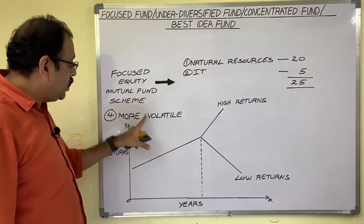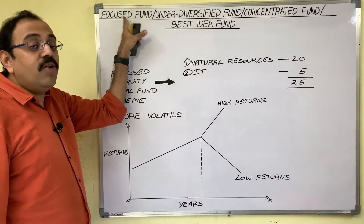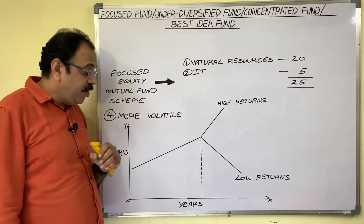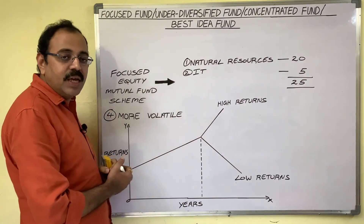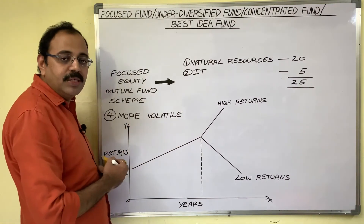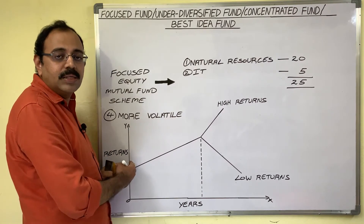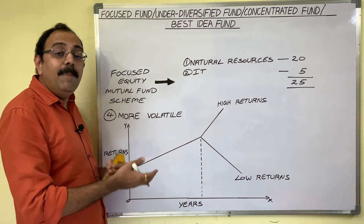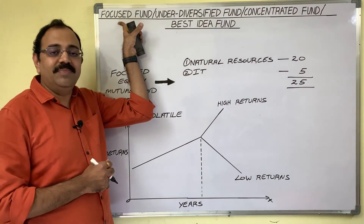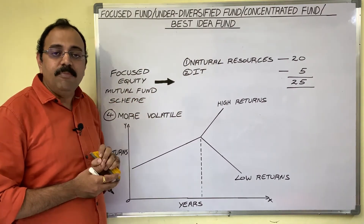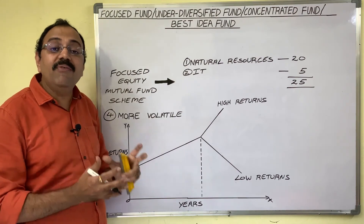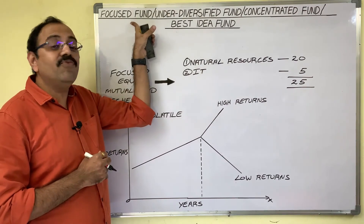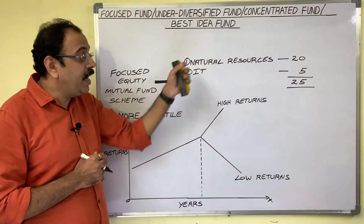The fourth point is that focused funds are more volatile than the overall stock market. Generally, investors prefer to invest in a fund based on its past performance, but this strategy may backfire in the case of focused funds. The sectors that gave high returns in the past may quickly run out of steam and leave heavy losses for investors. Sudden losses and sudden profits are common in focused funds.